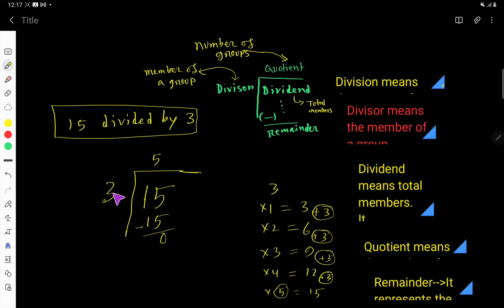So look, you have 15 members: 1, 2, 3, 4, 5, 6, 7, 8, 9, 10, 11, 12, 13, 14, 15. So you have 15 members and you have to make groups, and the number of members in a group will be 3.